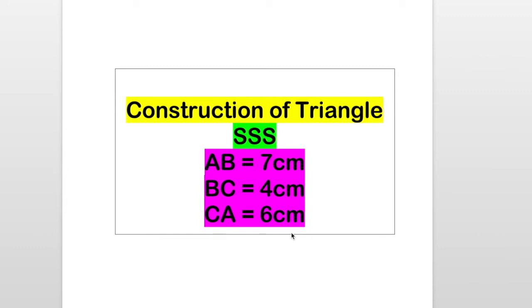Learn the construction of a triangle when three sides are given, that is SSS. Here we have an example: AB equals 7 cm, BC equals 4 cm, and CA equals 6 cm.